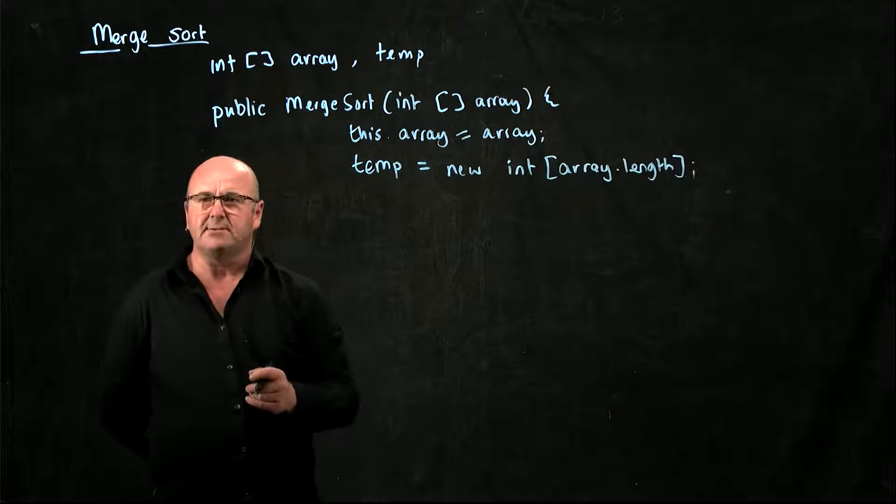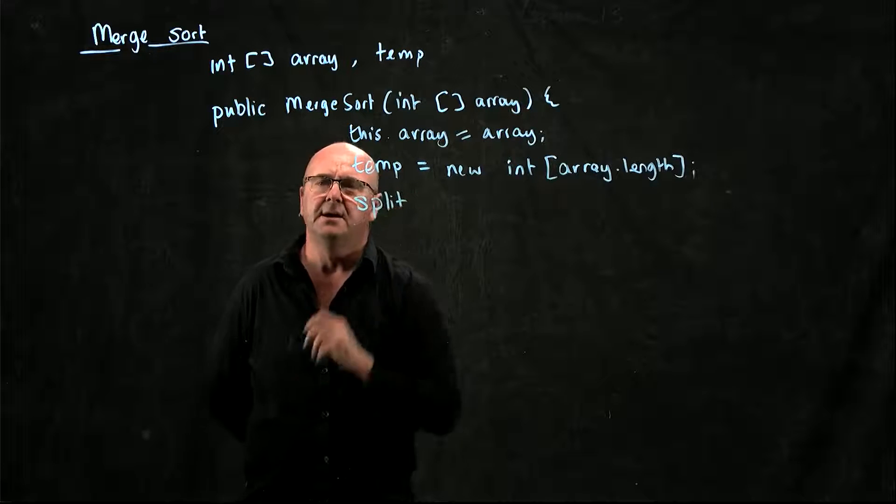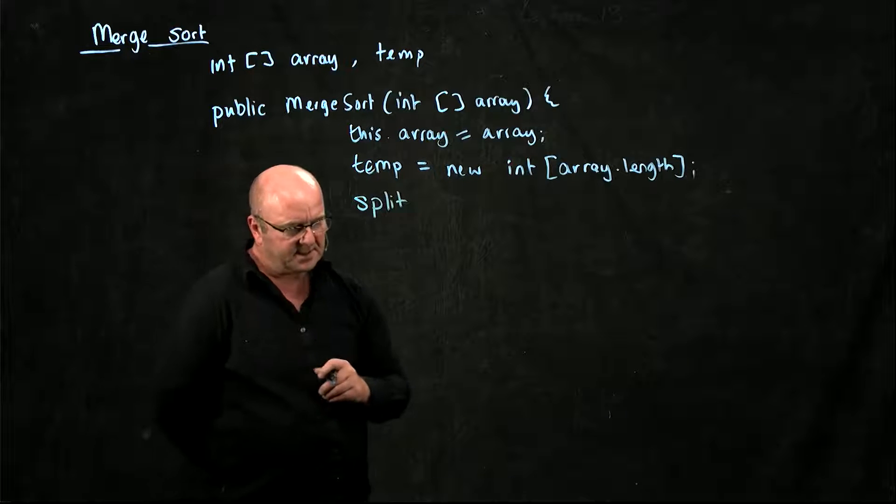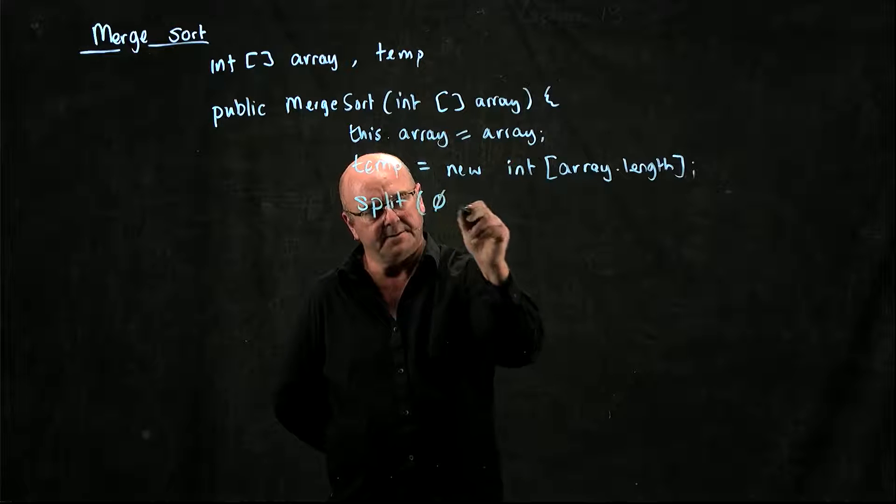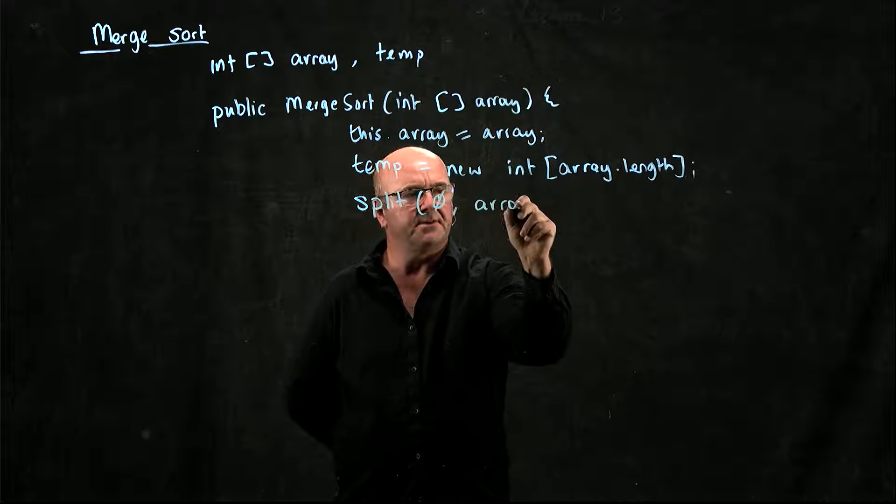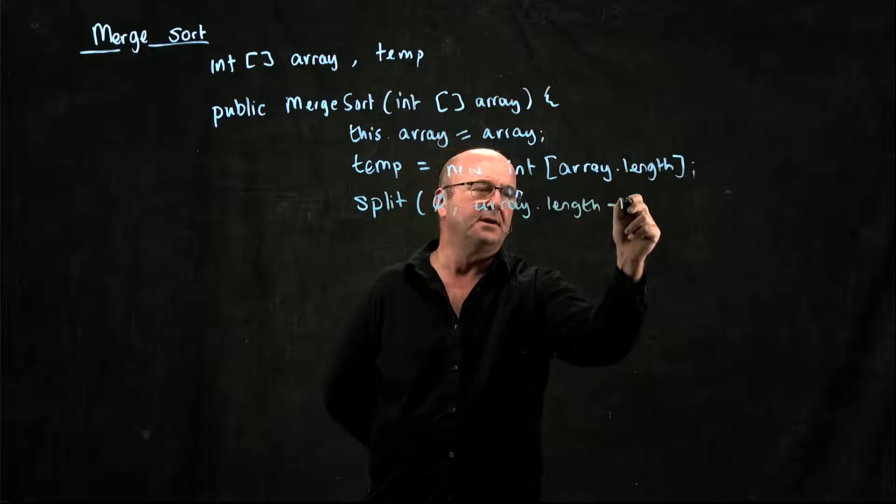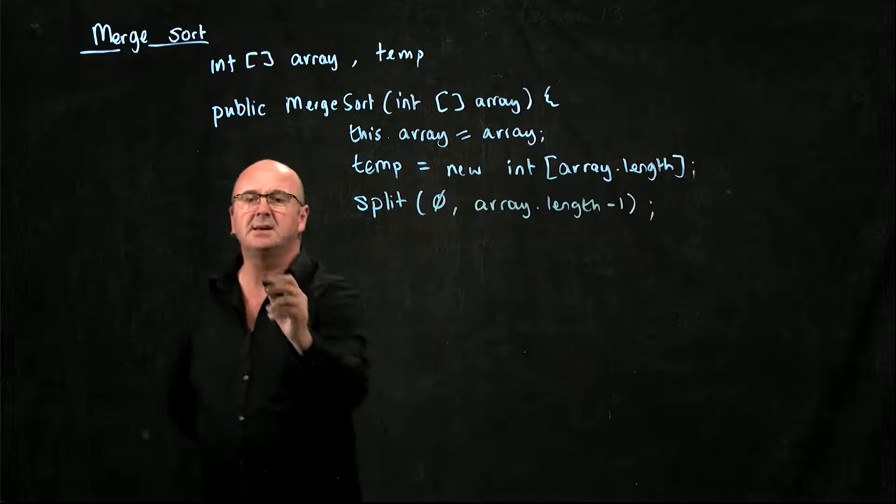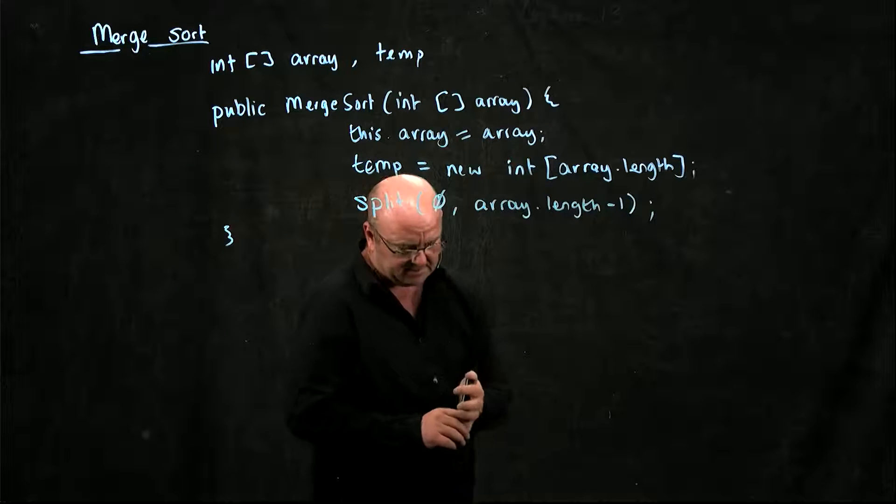And the first thing we have to do in our merge sort is we have to split things. And so our first split is going to be from 0 to array.length minus 1. And you'll see how that split works, let's have a look at how that works.